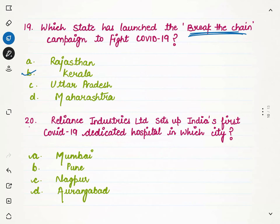Reliance Industries Limited set up India's first COVID-19 dedicated hospital in which city? The correct option is Pune. The hospital's name is Seven Hills Hospital, which is in Pune.